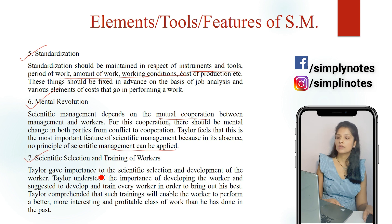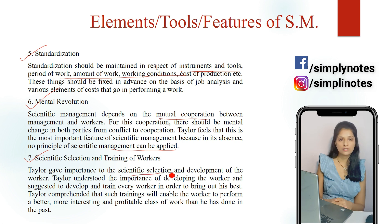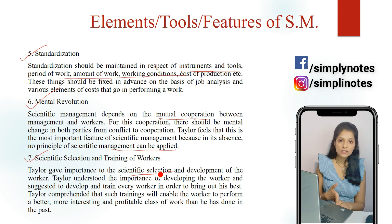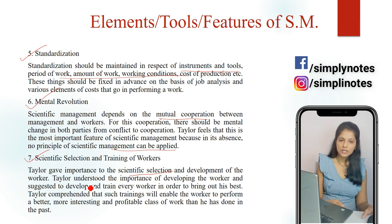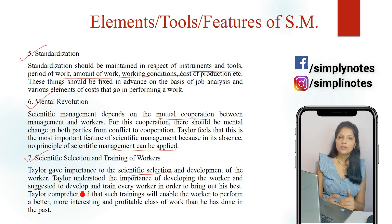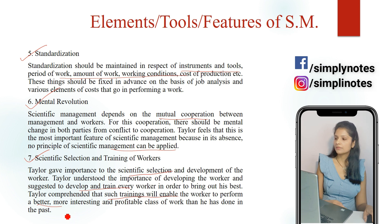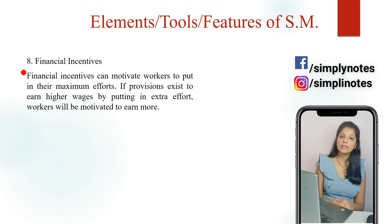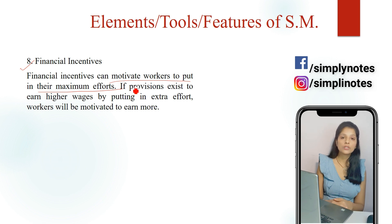The seventh feature is scientific selection and training of workers. According to Taylor, workers should be selected on a scientific basis taking into account their education, aptitude, physical strength, and experience. Workers ko aisa kaam dena chahiye jiske liye woh physically aur technically most suitable ho, aur regular basis par training bhi honi chahiye taaki woh aur efficient aur effective ban paayein. The eighth feature is financial incentives — according to Taylor, money is the main motivator, and workers can be motivated by economic rewards to perform better.